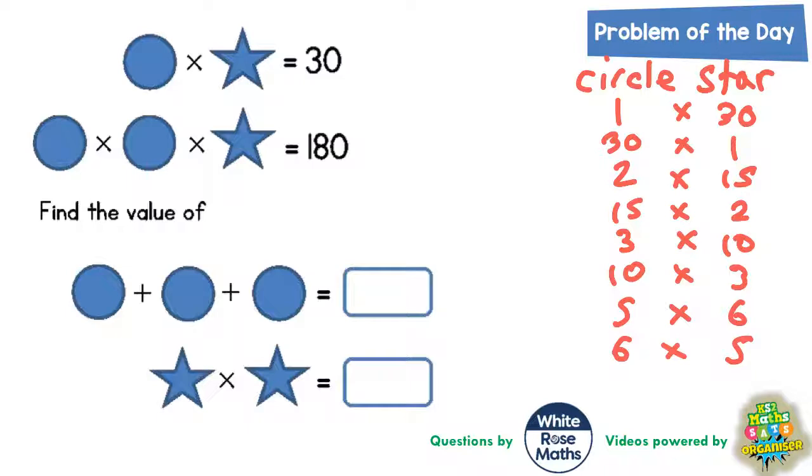Now that is all the pairs of factors that multiply together to make 30, so one of these pairs must be the correct combination of values for the circle and the star. But the question is which one? They all would fit into the top sum, but the real question is which ones fit into the second sum to make 180, where two circles times by a star makes 180. The only thing we can do here is multiply these out and keep trying a pair of values until we get the correct one.